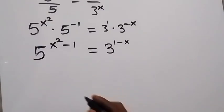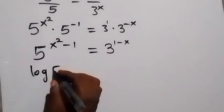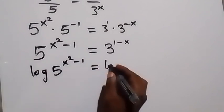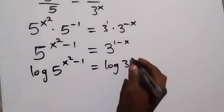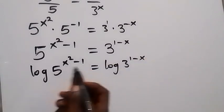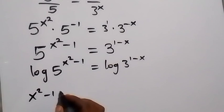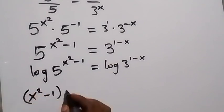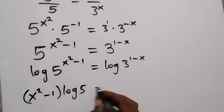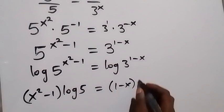We can take the log on both sides. On this side we have log of 5 raised to the power x squared minus 1, equals log of 3 raised to the power 1 minus x. From the law of logarithms, the power comes to the front: this becomes (x squared minus 1) times log 5, equals (1 minus x) times log 3.